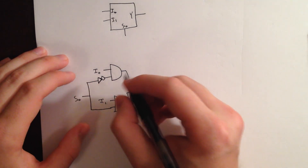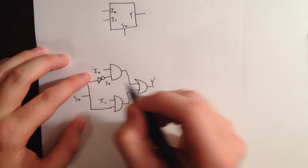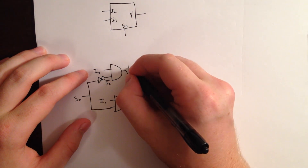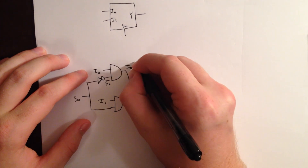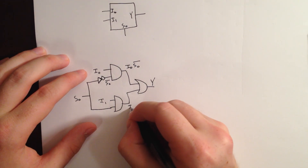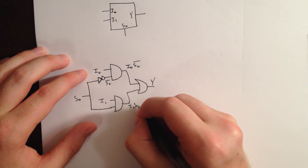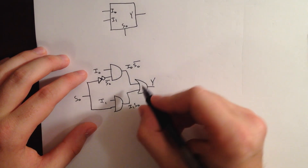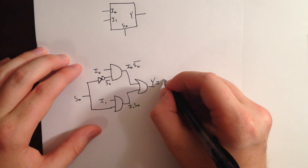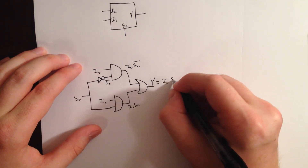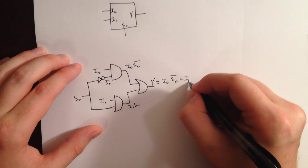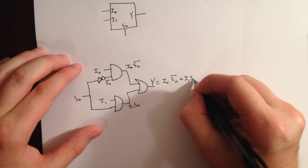So after this NOT gate we will have S0 NOT, and then once these are ANDed together we will have I0·S0 NOT. And after this AND gate we will have I1 and S0. So that means our output must be Y = I0·S0 NOT, OR I1·S0.